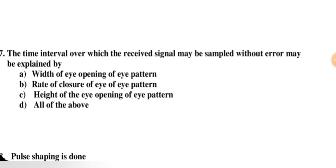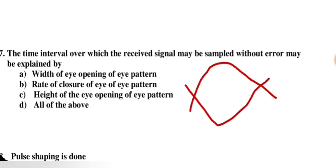The time interval over which the received signal may be sampled without error may be explained by the width of the eye pattern. The eye pattern shows where there is no error. According to the question, this is explained by the width of the eye pattern, so option A is correct.